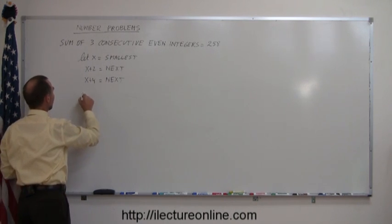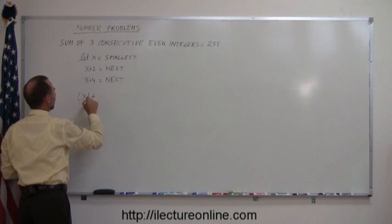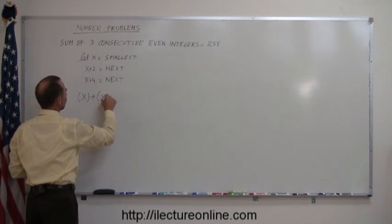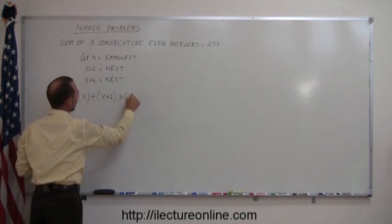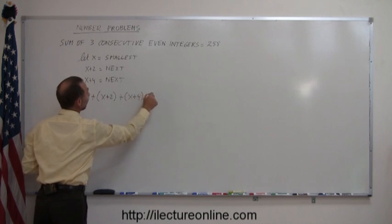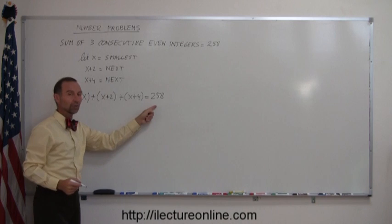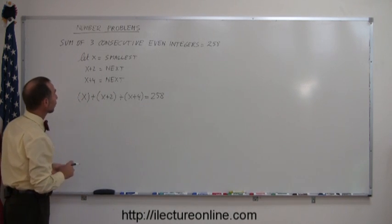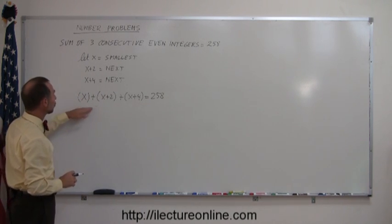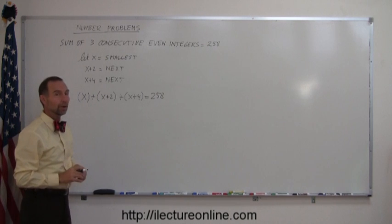So that means that x plus, and I'll put parentheses around it, x plus 2 plus x plus 4 must add up to 258. So this is how I write in algebraic terms that I'm adding 3 consecutive even integers so they all must be 2 apart from one another.